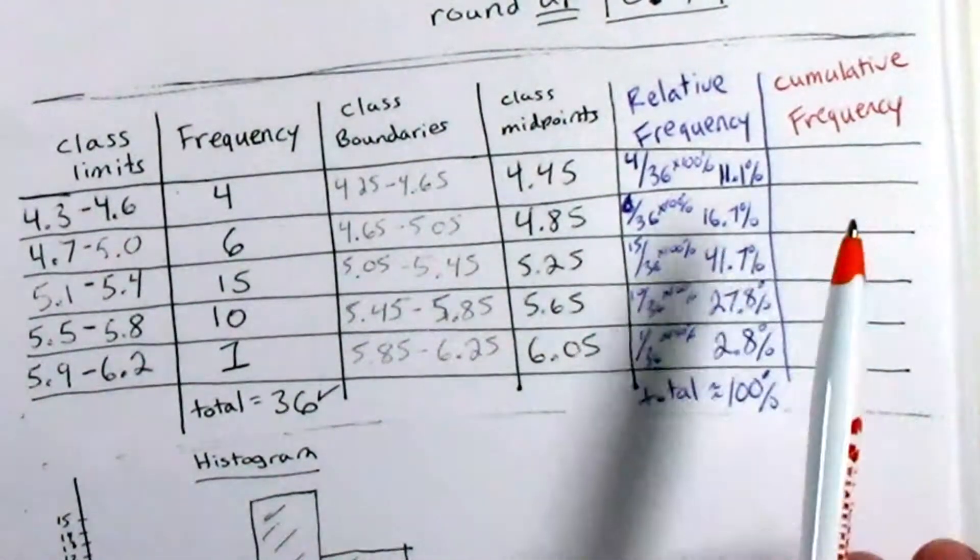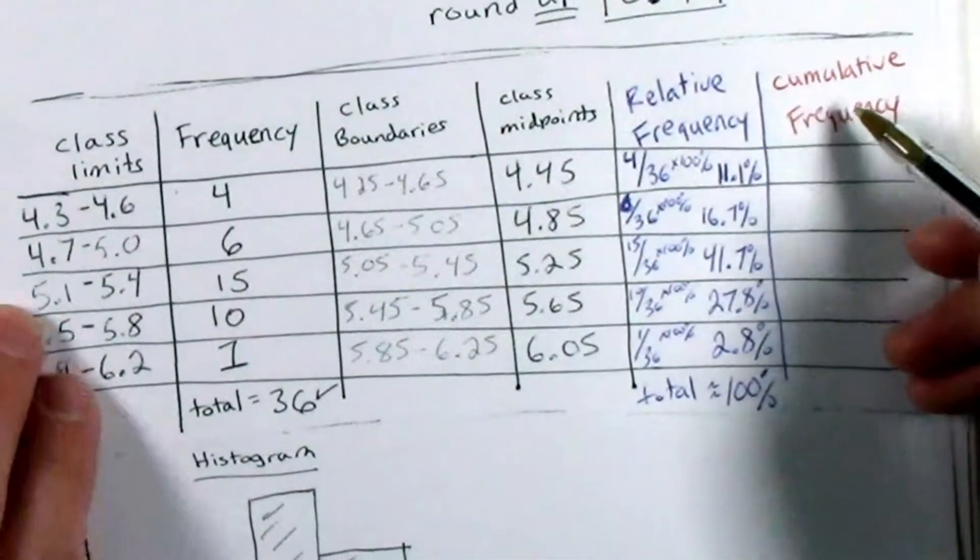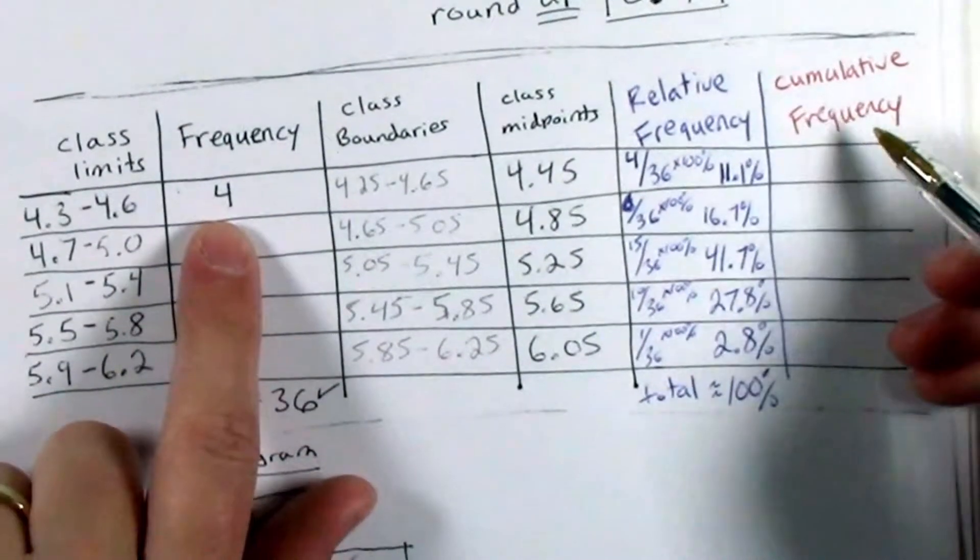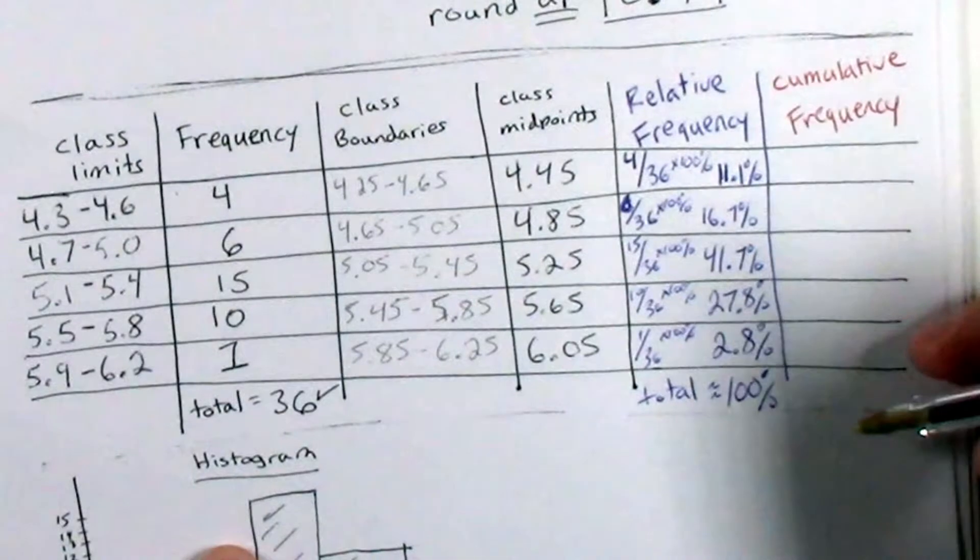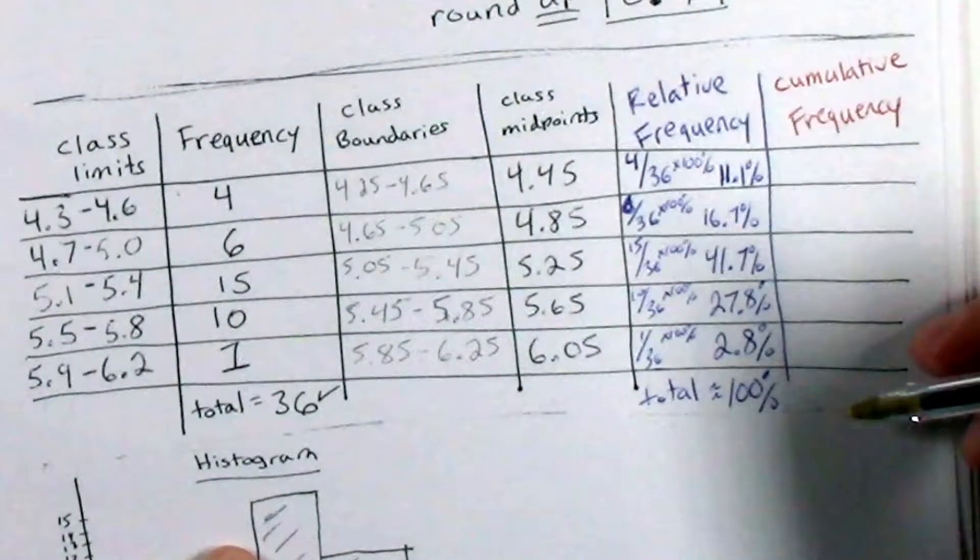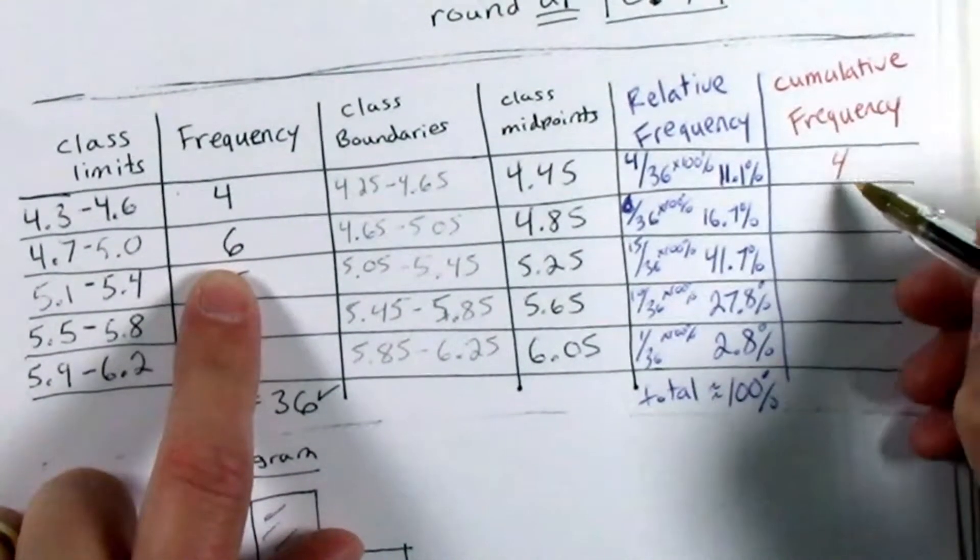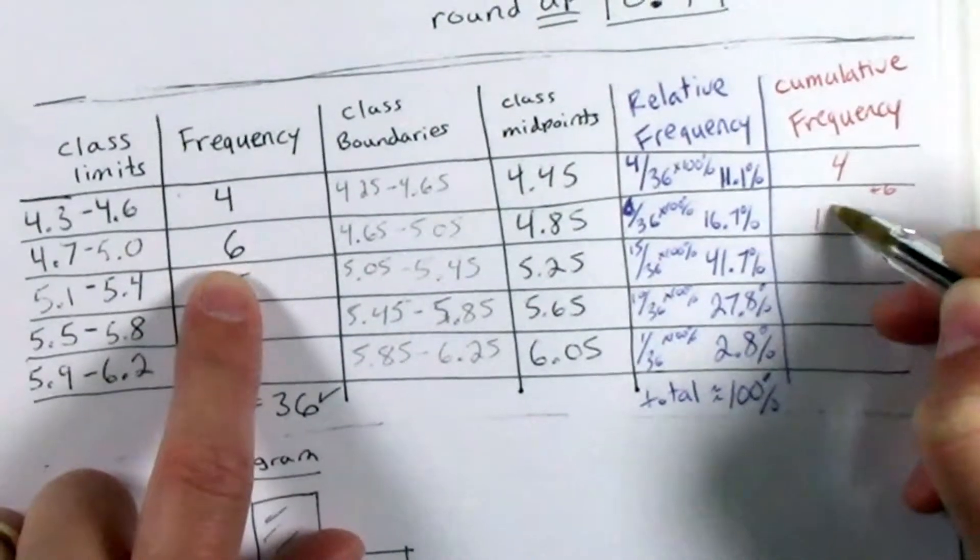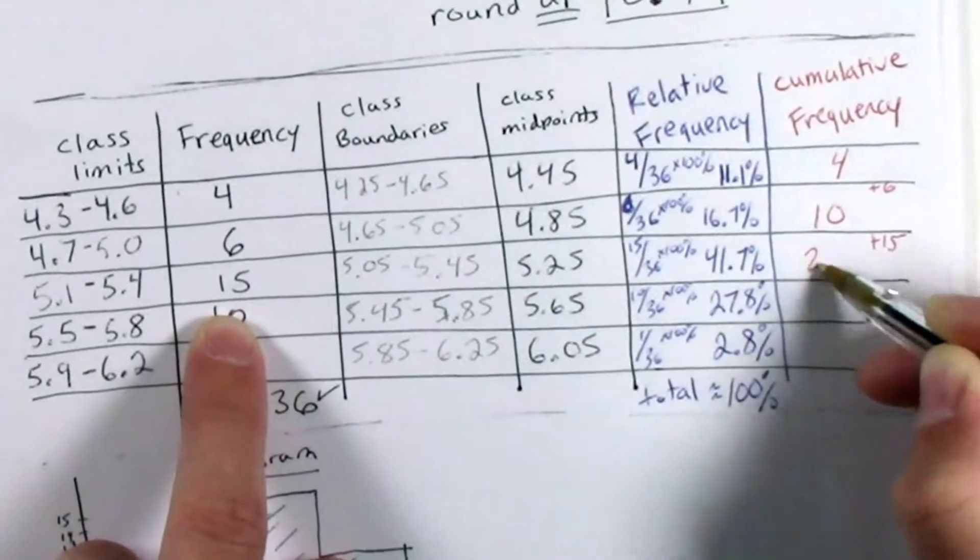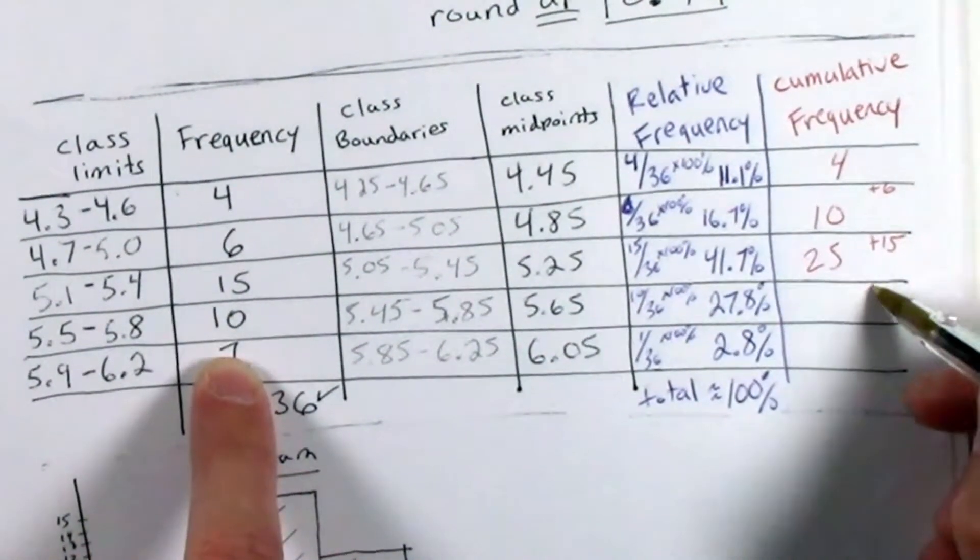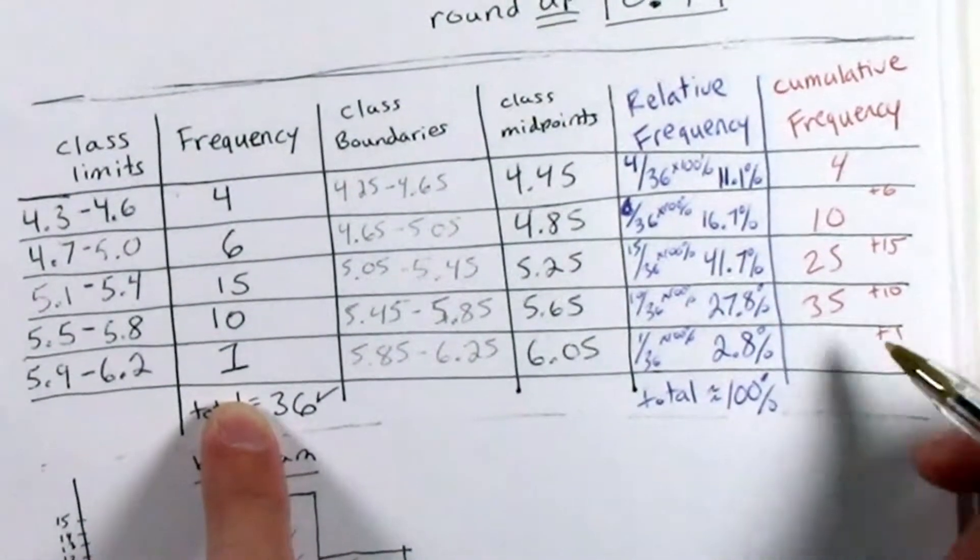Okay, so moving on to cumulative frequencies. In cumulative frequencies, we accumulate the frequency as we go from our first class to our last class. So our first class, we started with 4 observations, and then we add on 6 observations to get 10. And then we add on 15 observations to get 25, add on 10 to get 35, and then add on 1 to get 36.